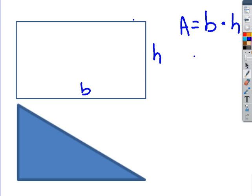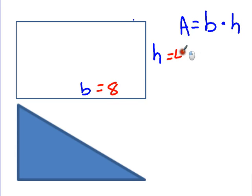So if I'm going to give an example and I said that this base equals 8 and this height equals 4, to find the area, the area equals 4 times 8, which was 32. So 32 square units fill up this entire rectangle.